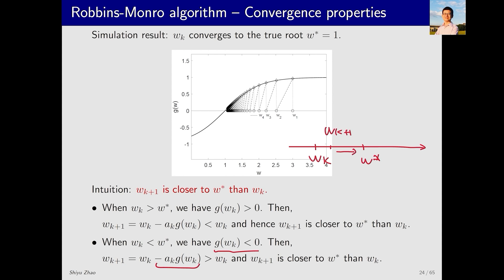This intuitive example shows why the RM algorithm converges. We can also look at this by plotting g(w), with w as the input and y, or g(w) as the output. The basic idea is to input w, observe the output, and if the output is greater than 0, then we decrease w slightly. The output decreases until it equals 0 and w stops changing. The key point here is how much to decrease w each time. The RM algorithm suggests subtracting ak*g.